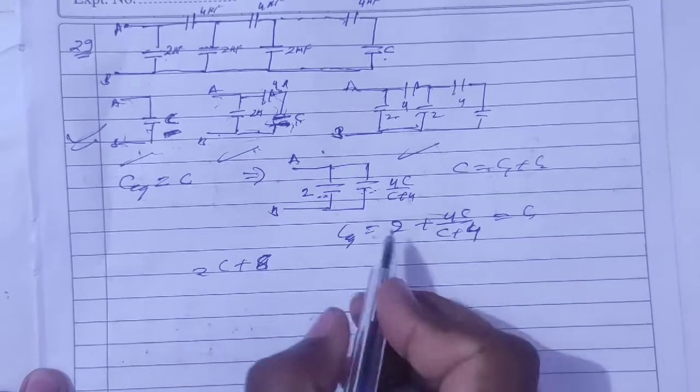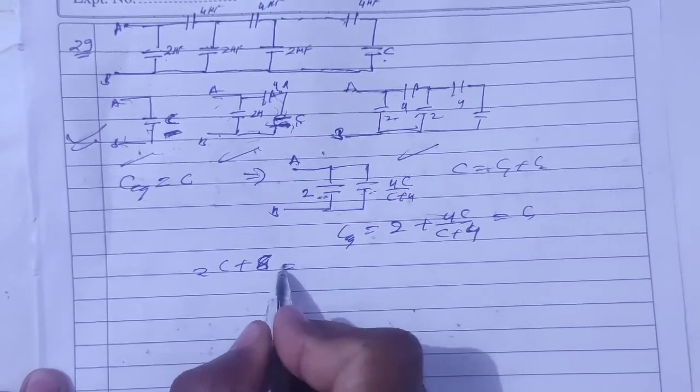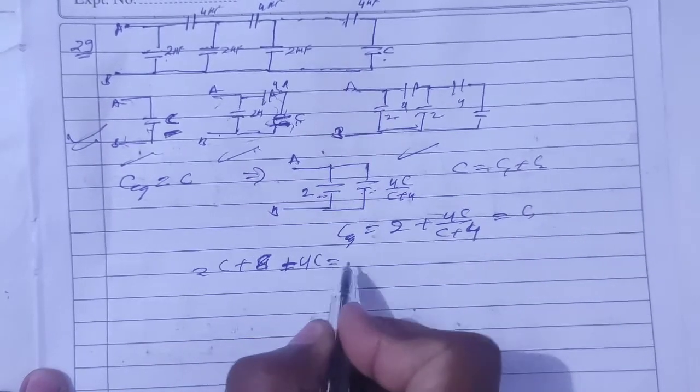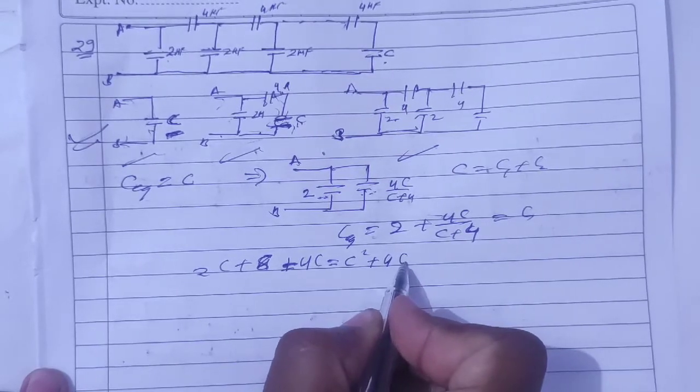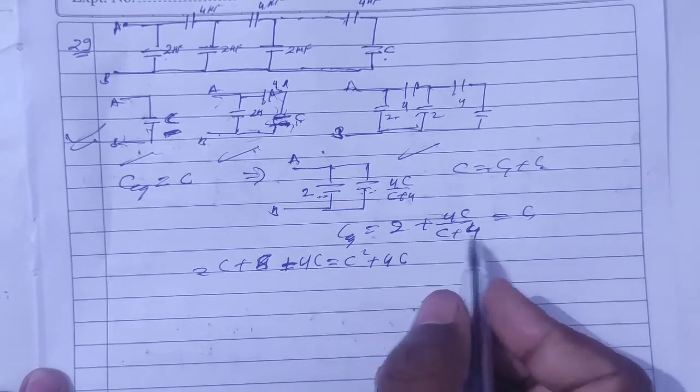2C plus 4, so 2C plus 8. 2C plus 8 plus 4C is equal to C square plus 4C. 2C plus 8.